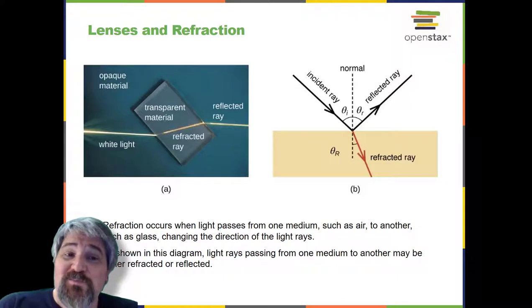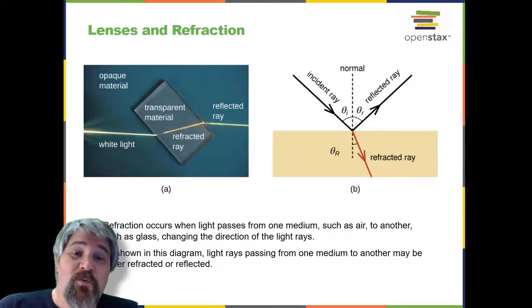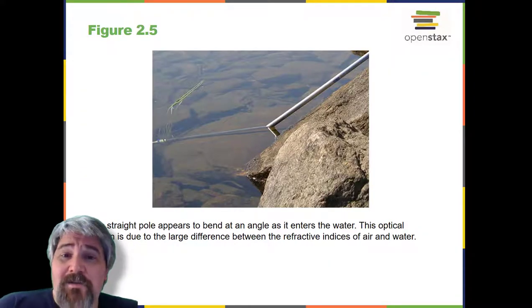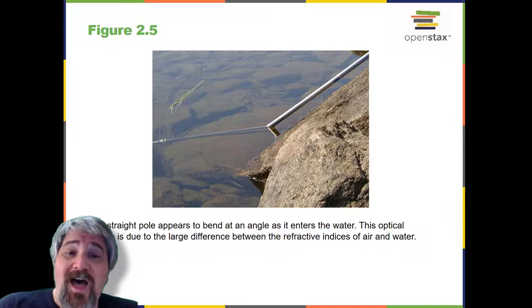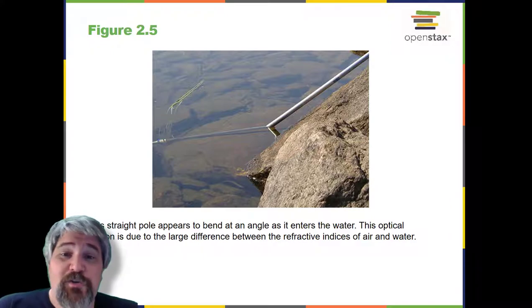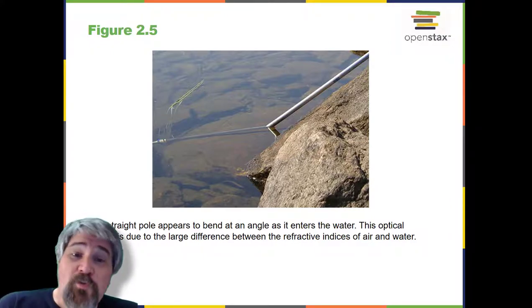For example, light moves much more slowly through water than through air, so light entering water from air can change direction greatly. We say that the water has a higher refractive index than air. When light crosses a boundary into a material with a higher refractive index, its direction turns to be closer to perpendicular to the boundary, more toward a normal to the boundary.